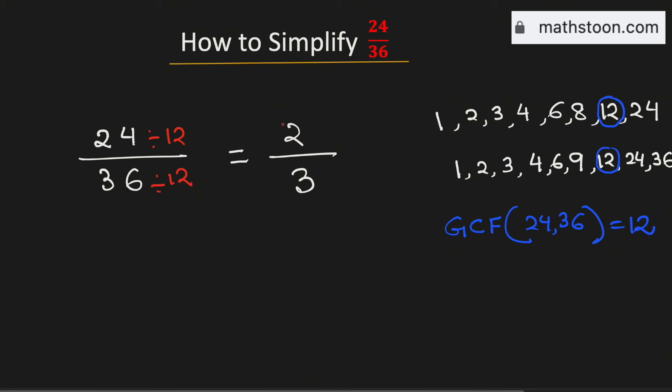As 2 by 3 cannot be simplified further, this 2 by 3 is the simplified reduced form of the fraction 24 divided by 36 and this is our final answer.